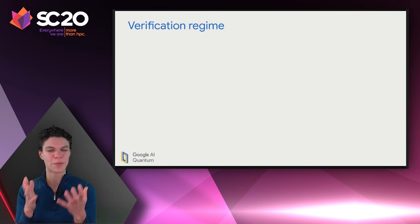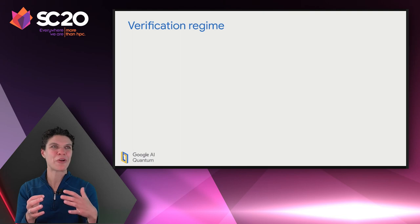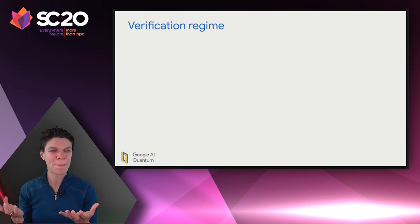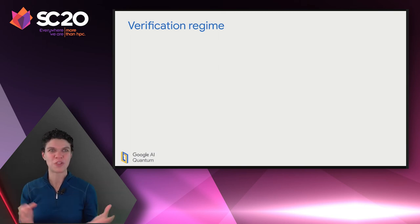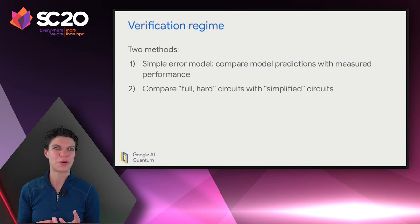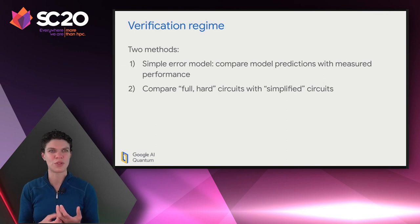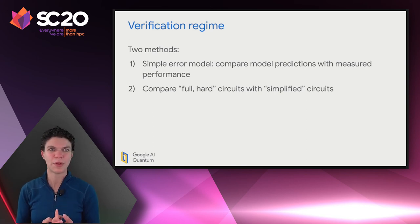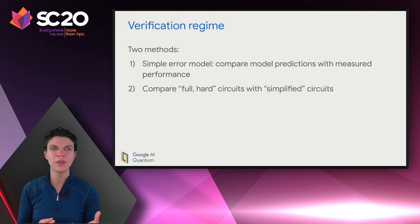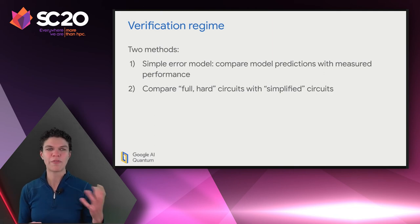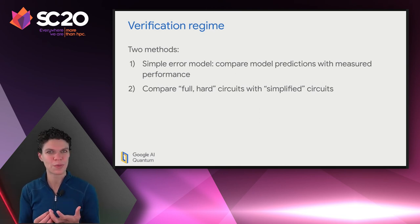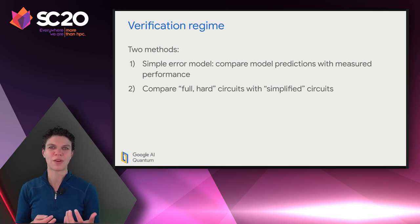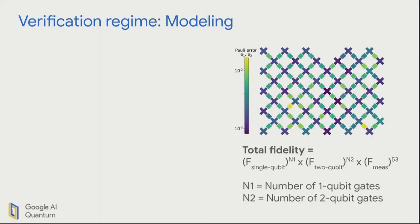This indicates a problem: if our quantum processor is running in a regime where no classical computer can keep up, we won't be able to verify that the quantum computer is doing what it's supposed to. To circumvent that, we use a verification regime to check the quantum computer is behaving correctly in the space we can check, giving us confidence it continues to perform similarly when beyond what we can verify. We use two methods: first, a simple error model comparing model predictions with measured performance; second, using both full hard circuits and some simplified circuits that are easier for the classical computer to compute but don't really change the workload the quantum computer feels.